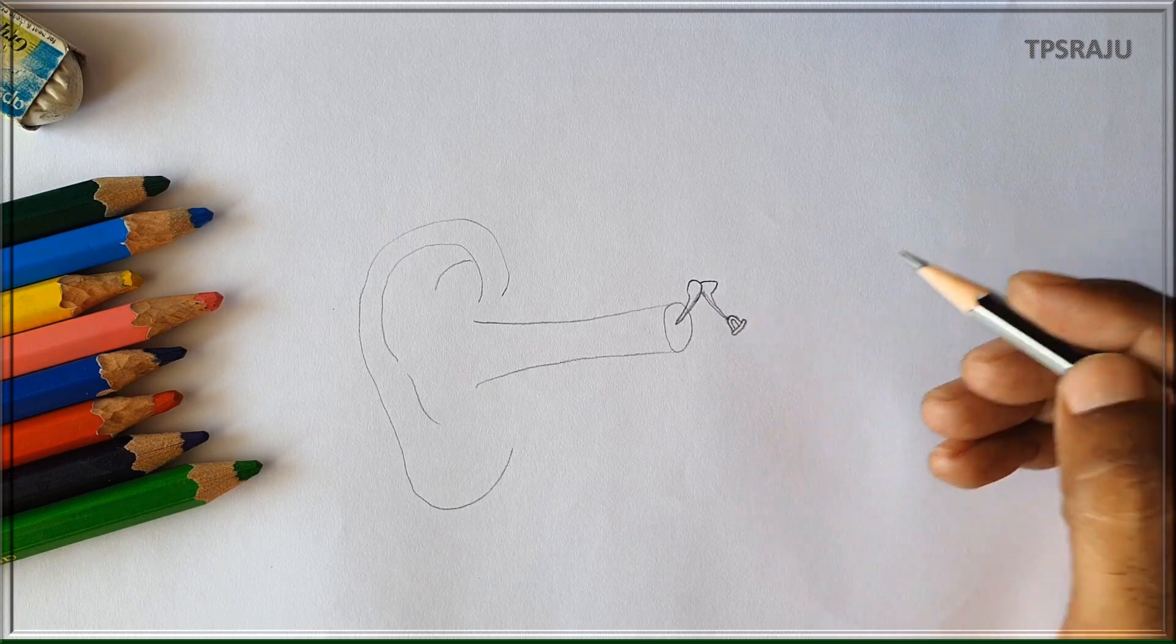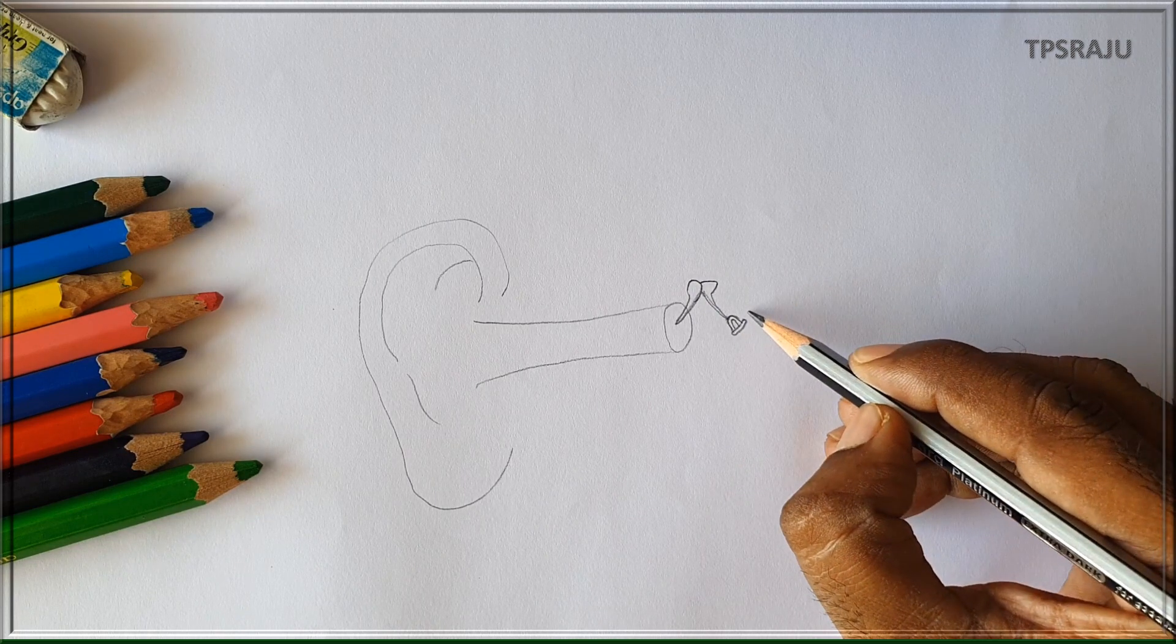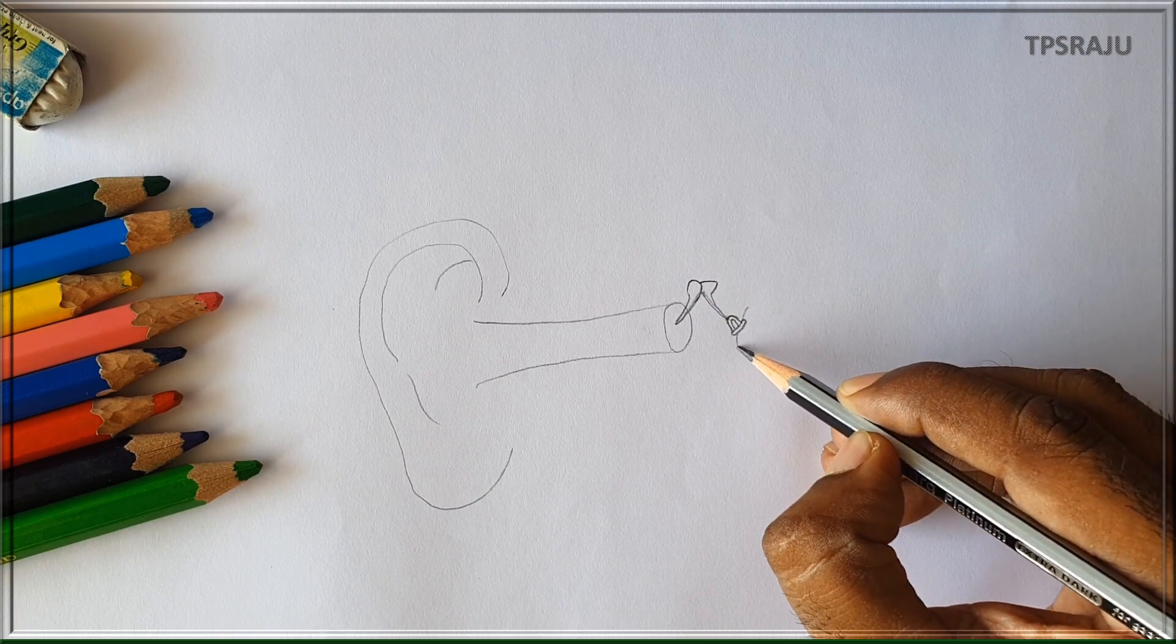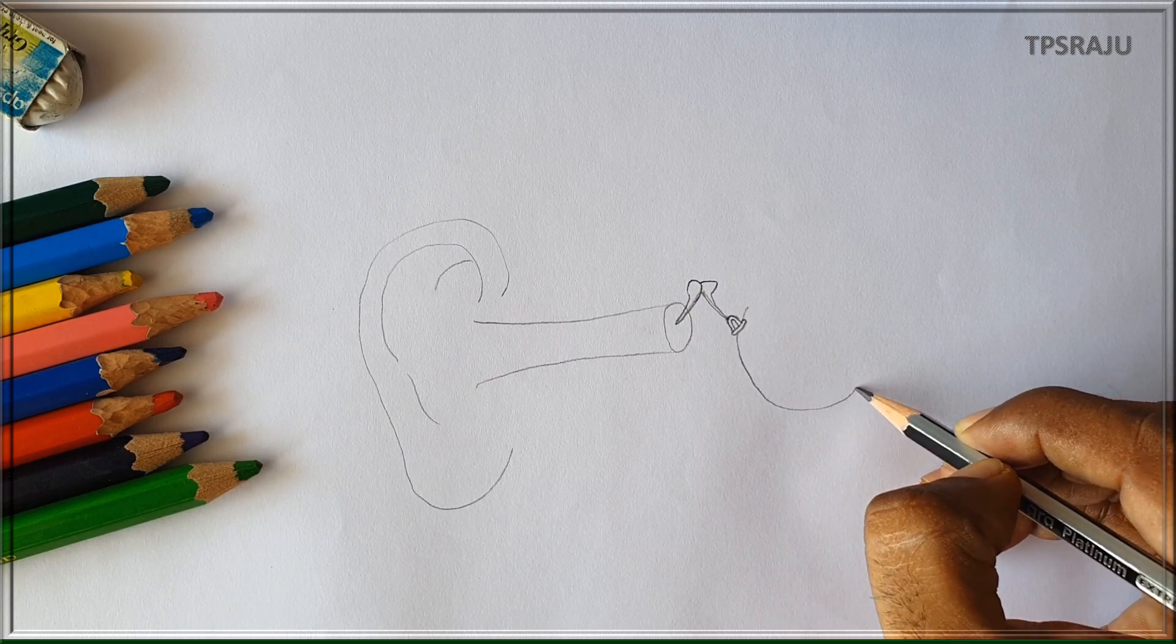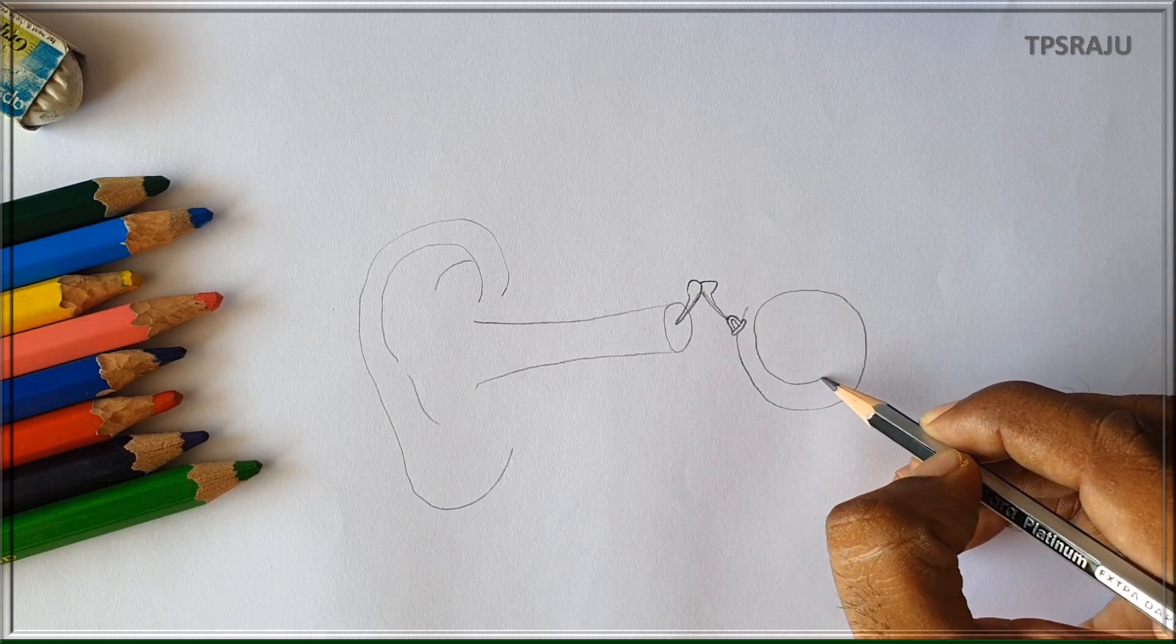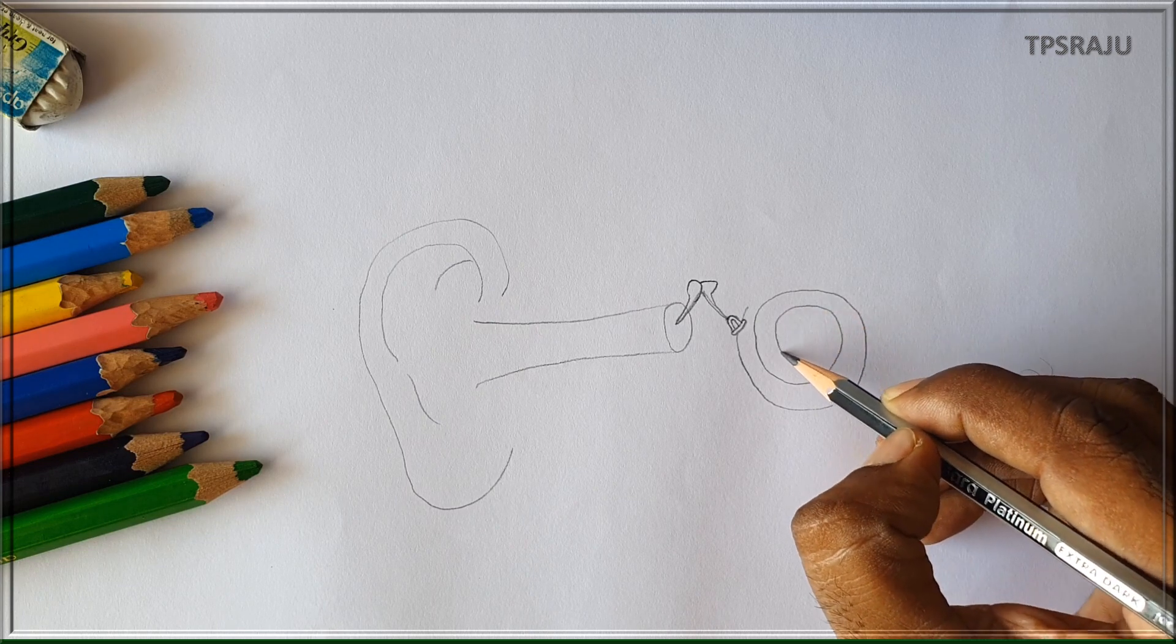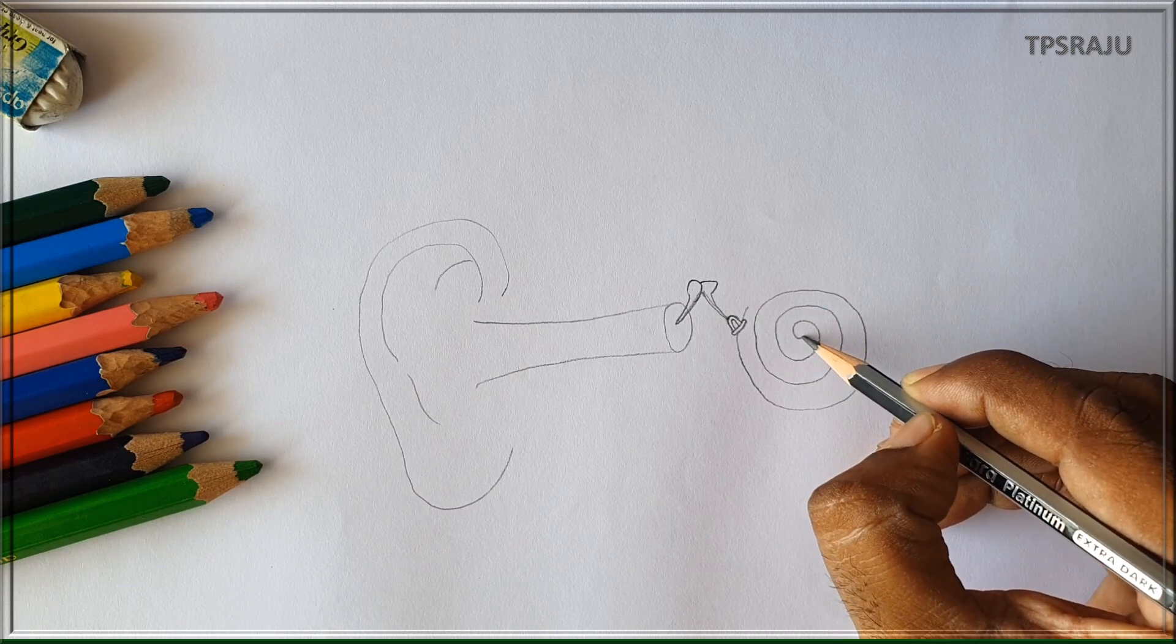Stapes is the smallest bone in our body. Stapes is in contact with cochlea which is present in the inner ear. It is in spherical shape. It plays main role in hearing.